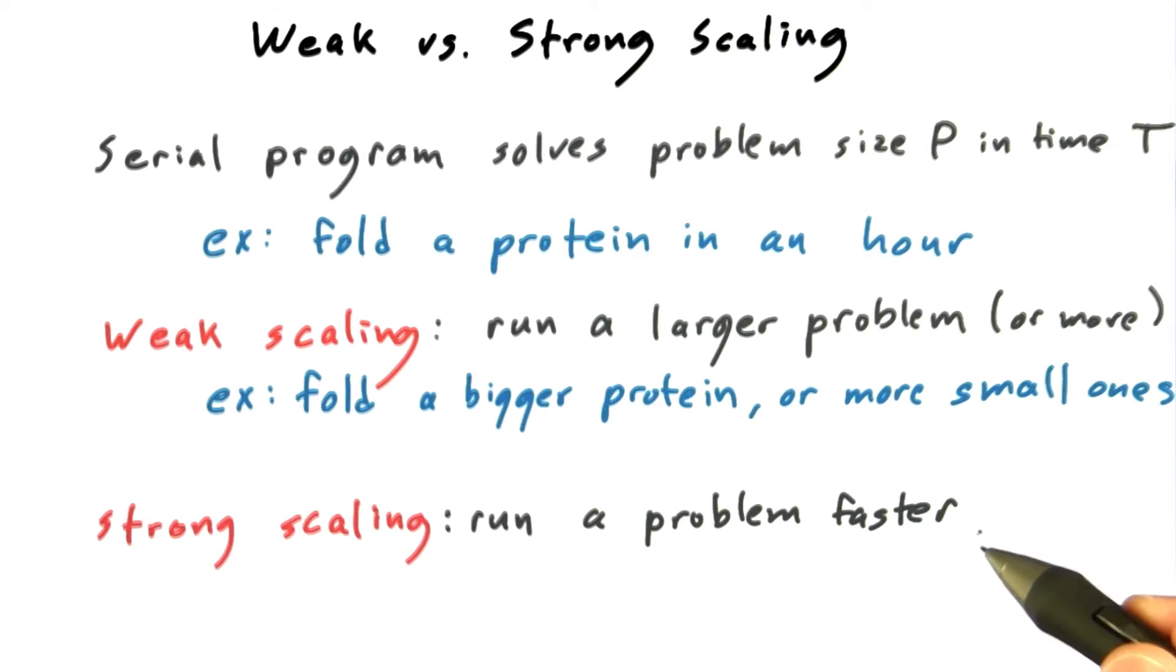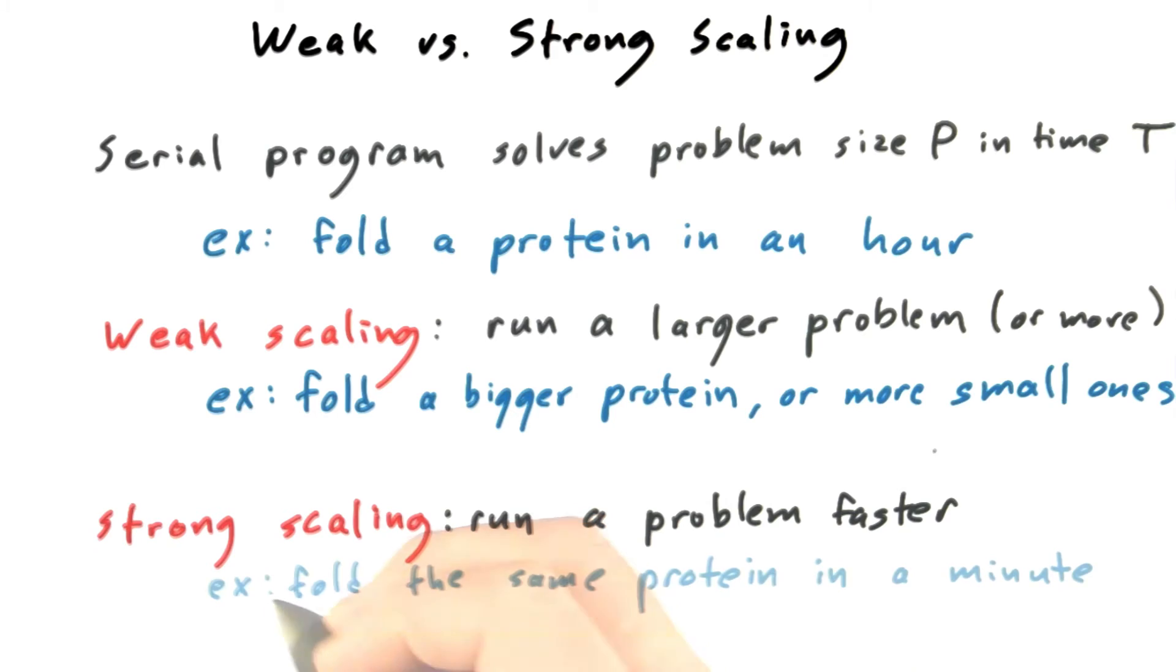Strong scaling means using parallel computing to run a problem faster, a single problem size. So if you wanted to fold that same protein that you were folding in an hour, and you wanted to fold it in a minute, then that would be an example of strong scaling.